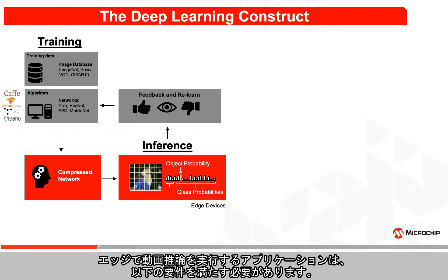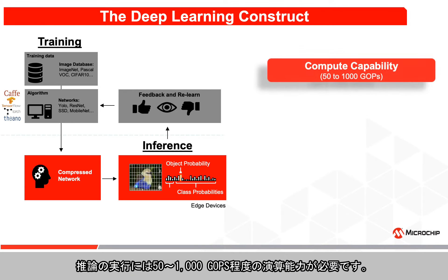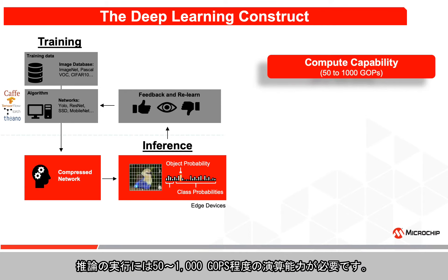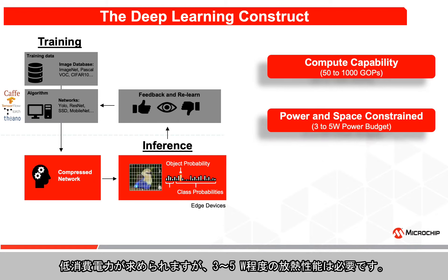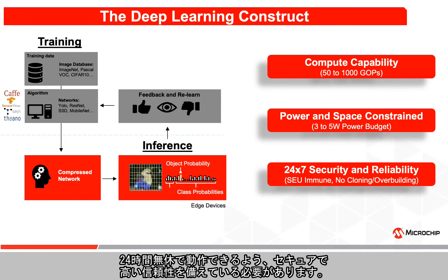Applications running video inferencing on the edge must fulfill the following requirements. They must have enough compute power for running inference, somewhere between 50 and 1000 giga operations per second. They must have low power consumption and excellent thermal dissipation, typically between 3 and 5 watts. They must be secure and reliable for 24-7 operation.